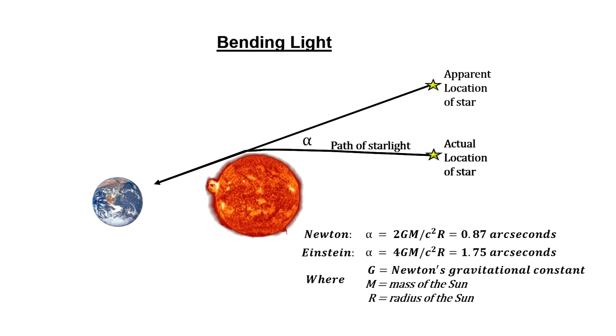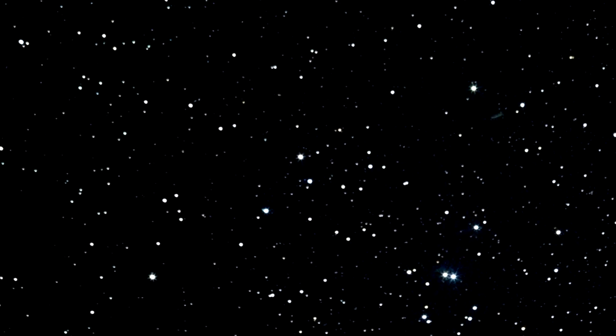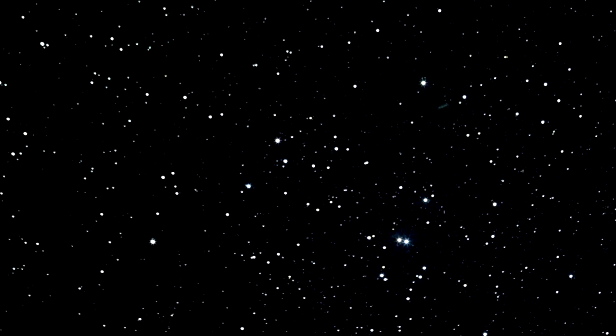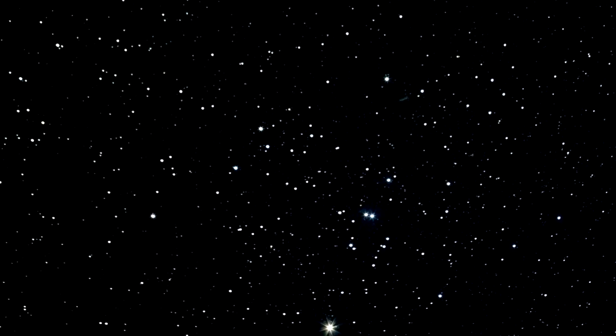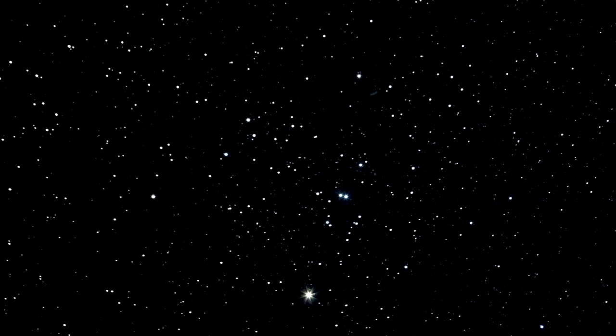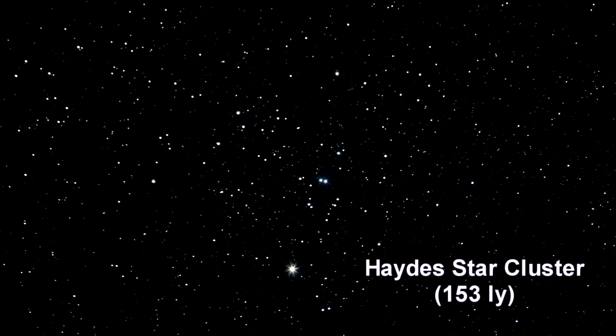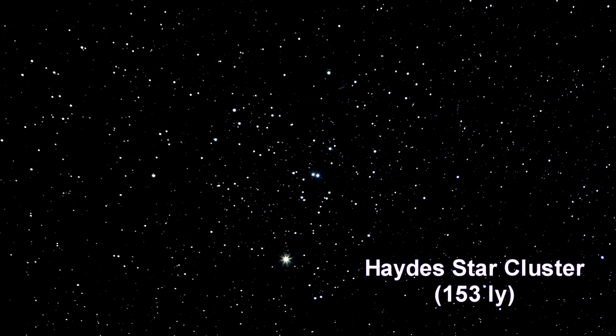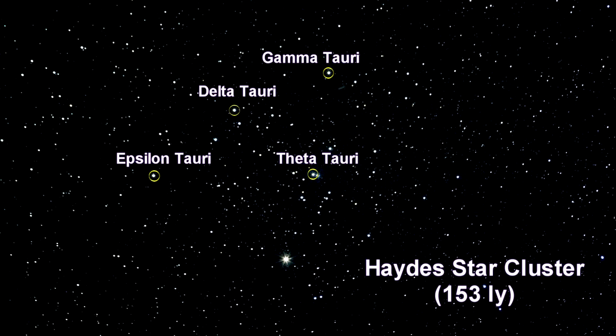Einstein suggested that a solar eclipse could be used to find the exact number. In 1919, a solar eclipse was slated to occur with the Sun silhouetted against the Hyades star cluster, the nearest open cluster to our solar system.